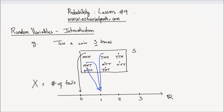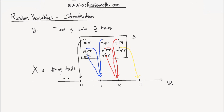Heads, tails, tails — in that case you have two tails. Heads, tails, tails can be mapped to the point two on the real number line. Tails, heads, tails can be mapped to the point two. Tails, tails, heads can be mapped to point two. And finally, the point TTT in your sample space can be mapped to the number three. So what we have here is the random variable X as a mapping from the sample space to the real number line.